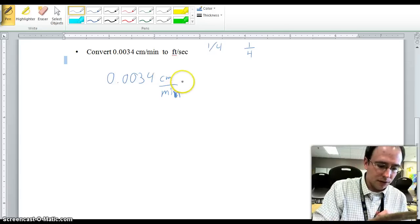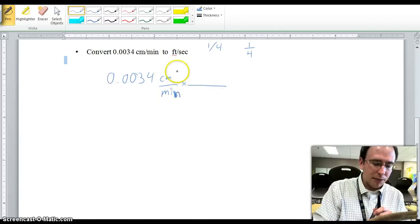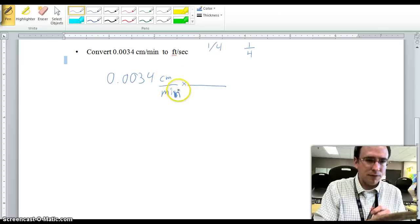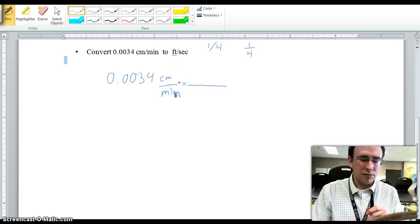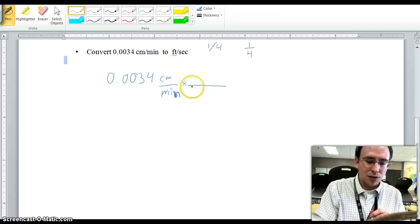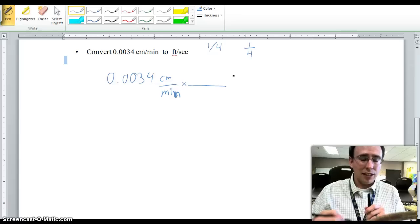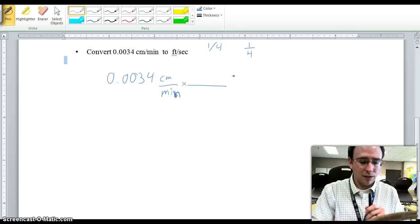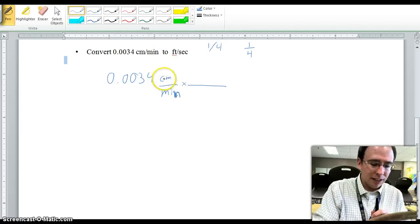So, when I do my conversion factor, I'm going to take my units, but notice I have two of them. I'm only switching one unit at a time, meaning that I don't cross over the centimeters and the minutes at the same time. I can only deal with one of those units in each conversion factor. So, I'm going to start with centimeters.